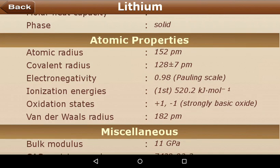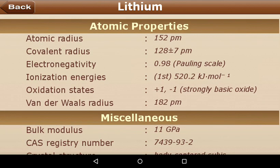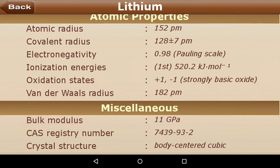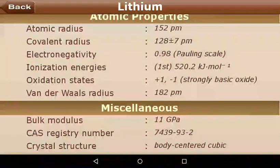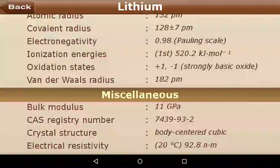Atomic properties: lithium has an atomic radius of 152 pm, a covalent radius of 128 ± 7 pm, and an electronegativity of 0.98. Ionization energy — since it is in group 1, it has a first ionization energy of 520.2 kJ/mol. It has only one oxidation state, +1, which is what makes it form a strongly basic oxide. Van der Waals radius is 182 pm.